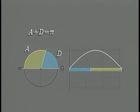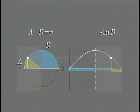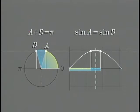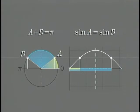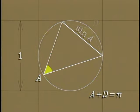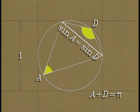In an earlier program, we also learned that supplementary angles have the same sine by analyzing the symmetry of sine waves. There's an easier way to see this: inscribe the angles in a circle of diameter one. Supplementary angles have the same sine for the simple reason that they cut off the same chord.